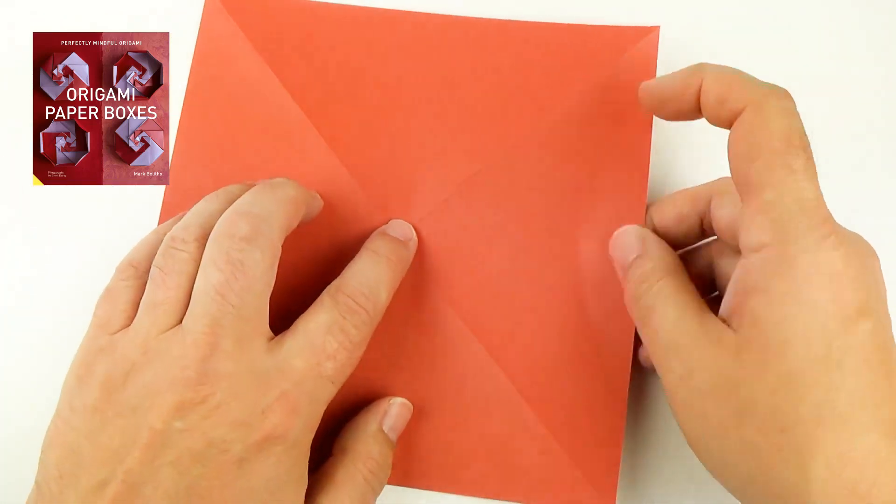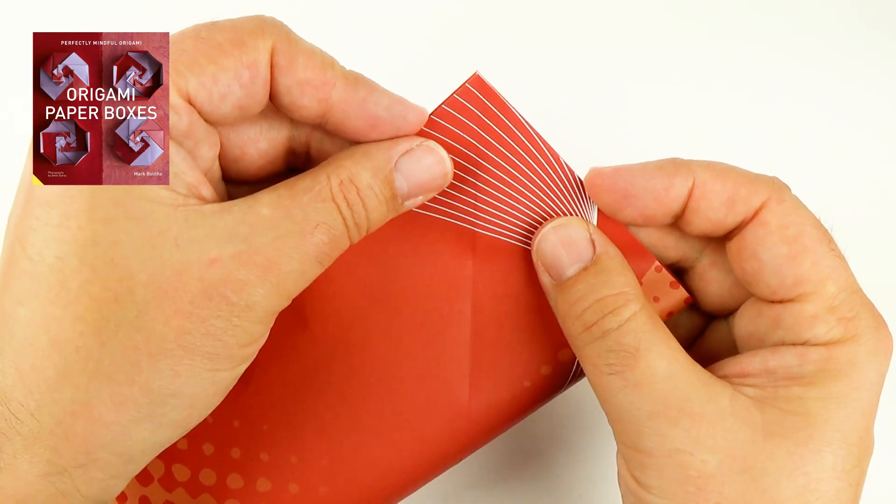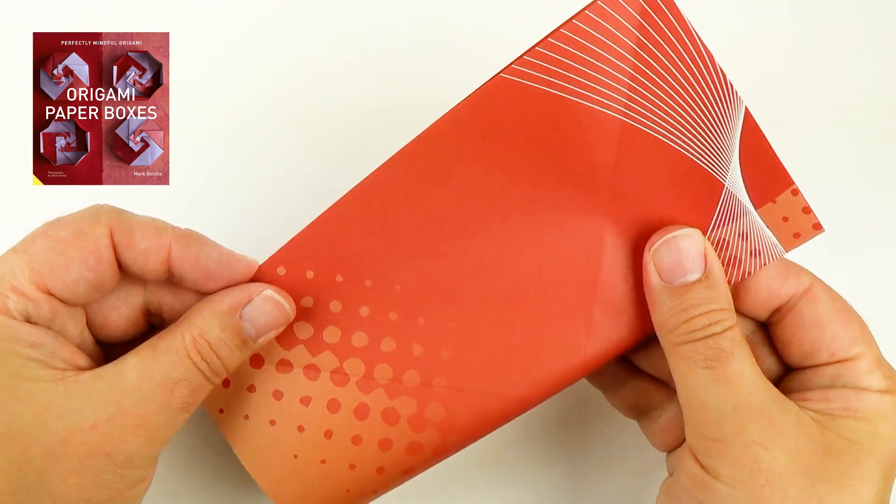Turn over, put two lengthwise creases in. First we fold the edge up, and again we line it up, hold it together, and crease.